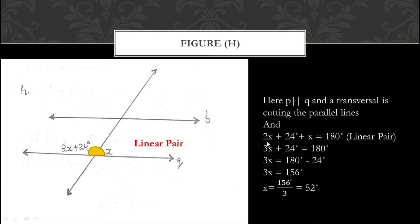We write the reason: linear pair. Adding 2X and X gives 3X + 24 = 180°. Transferring 24 to the other side: 3X = 180 − 24 = 156°. Dividing by 3, the value of X is 52°. So that is how we complete question number 2.